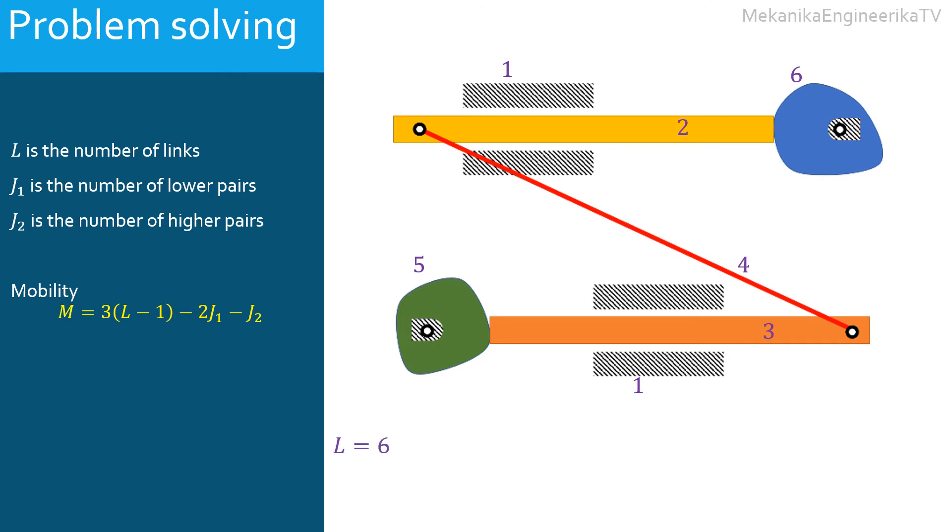The cams are connected to the ground using 2 rotating kinematic pairs, or 2 pin joints. Also bar 4 is connected to bar 2 and 3 using 2 other pin joints. The bars 2 and 3, the cam followers, are connected to the ground using 2 translating or prismatic kinematic pairs. In all, 4 pin joints and 2 prismatic joints are used. Thus, J1 is equal to 6.